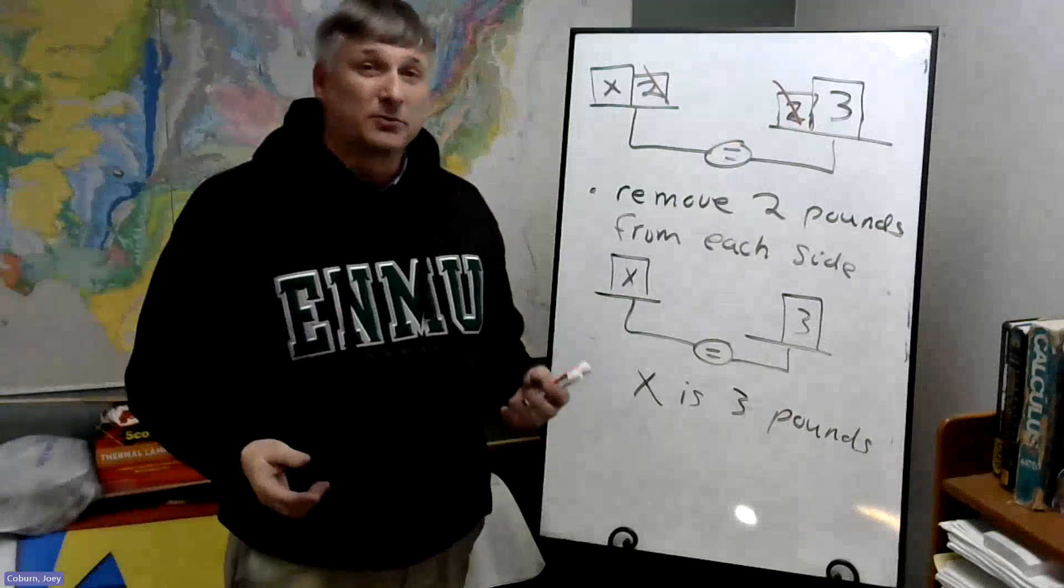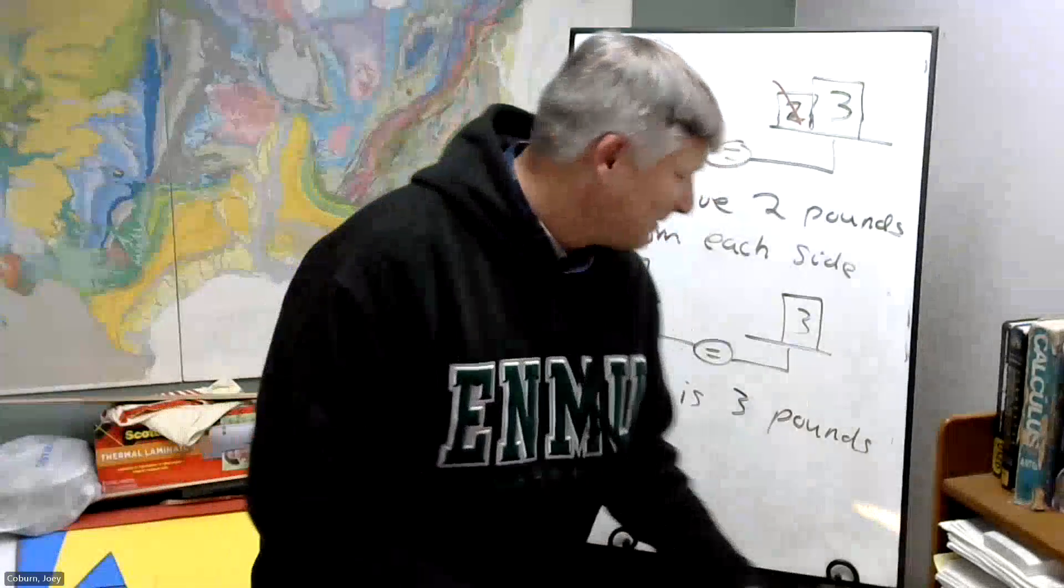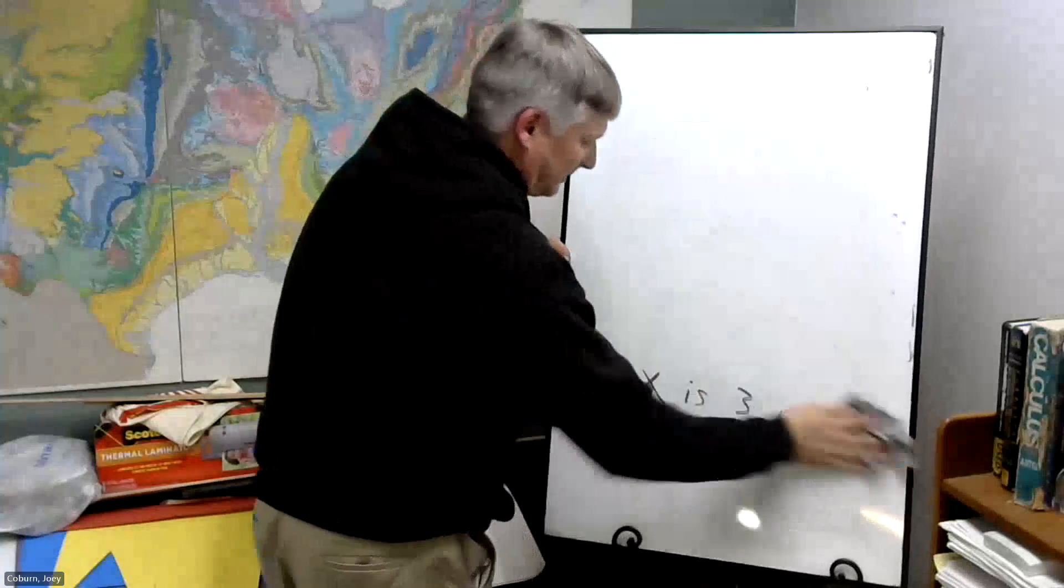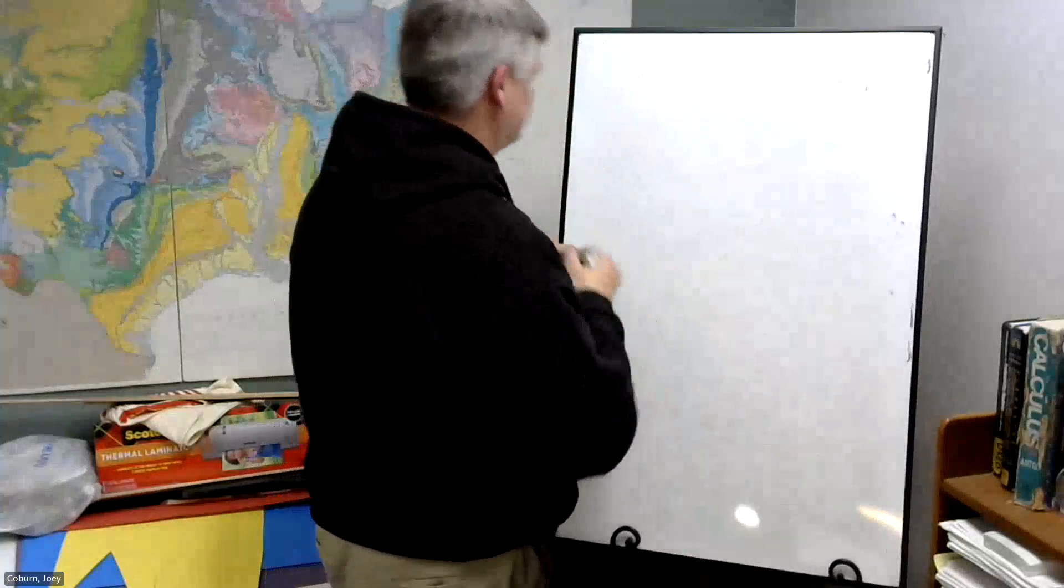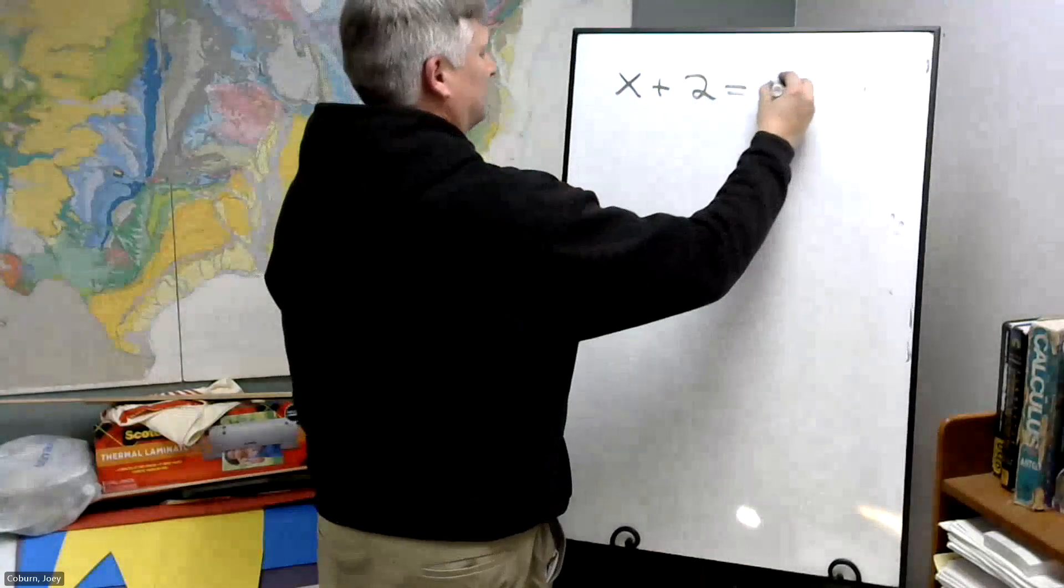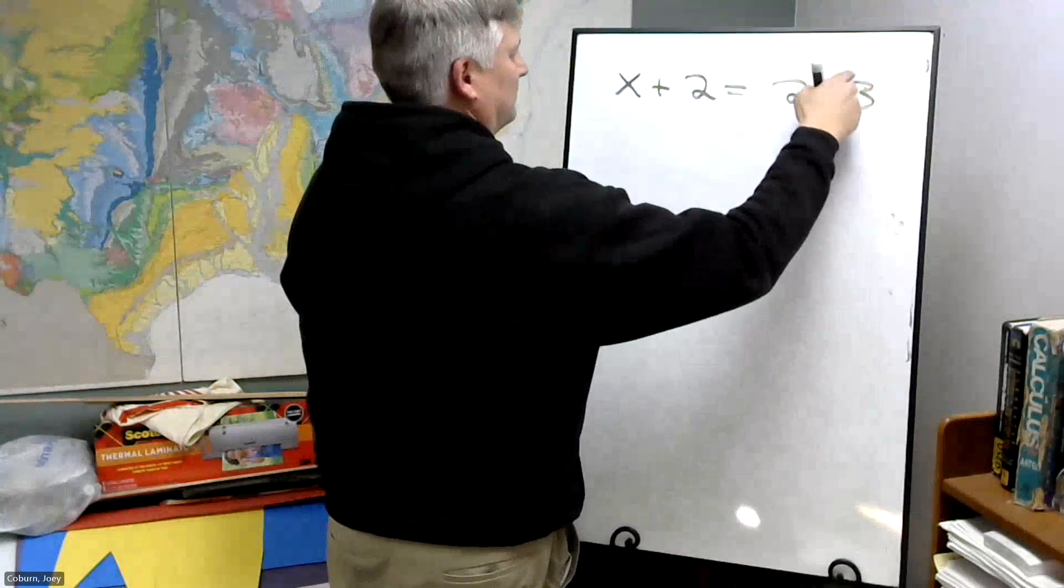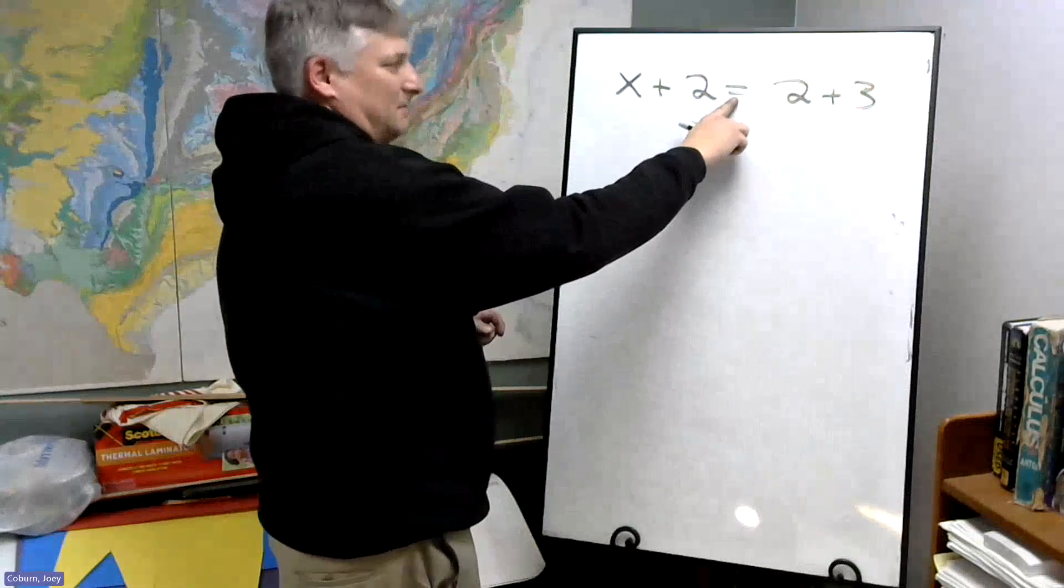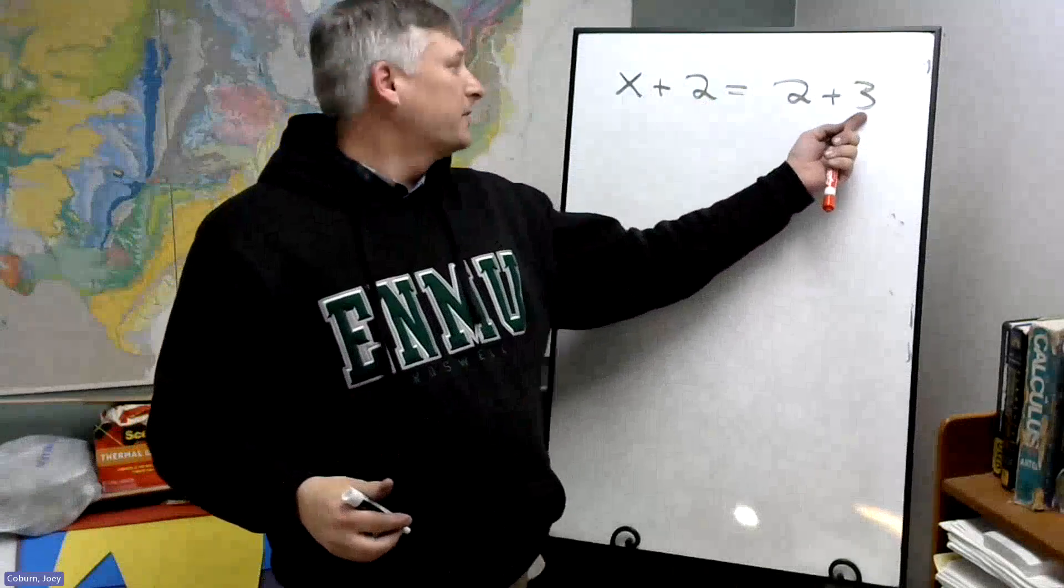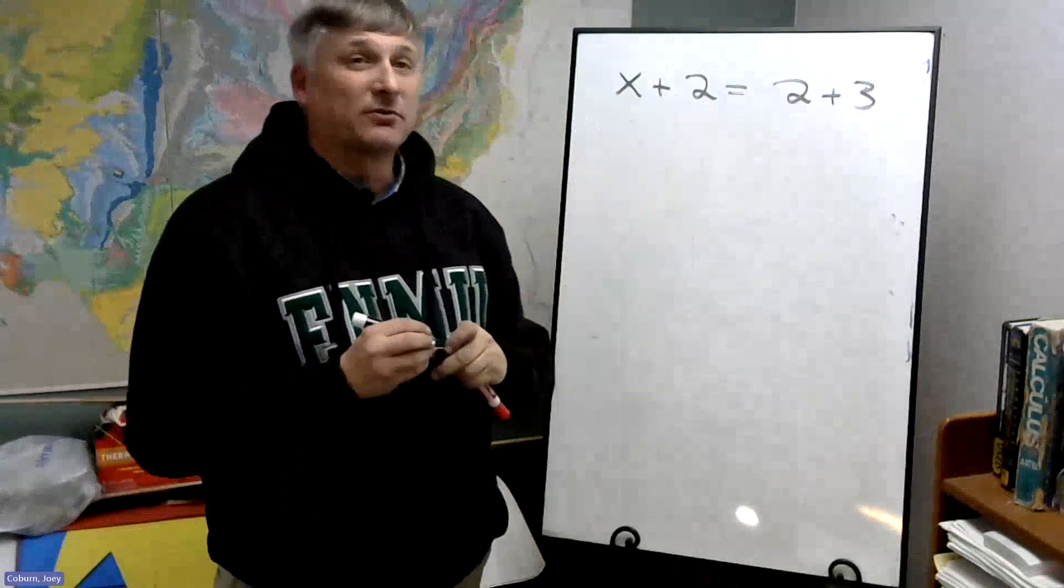So how do we do this in terms of equations? Well, what we have is the following. This is the symbol that says we're balanced. We have two plus three pounds over here and X plus two pounds over here.